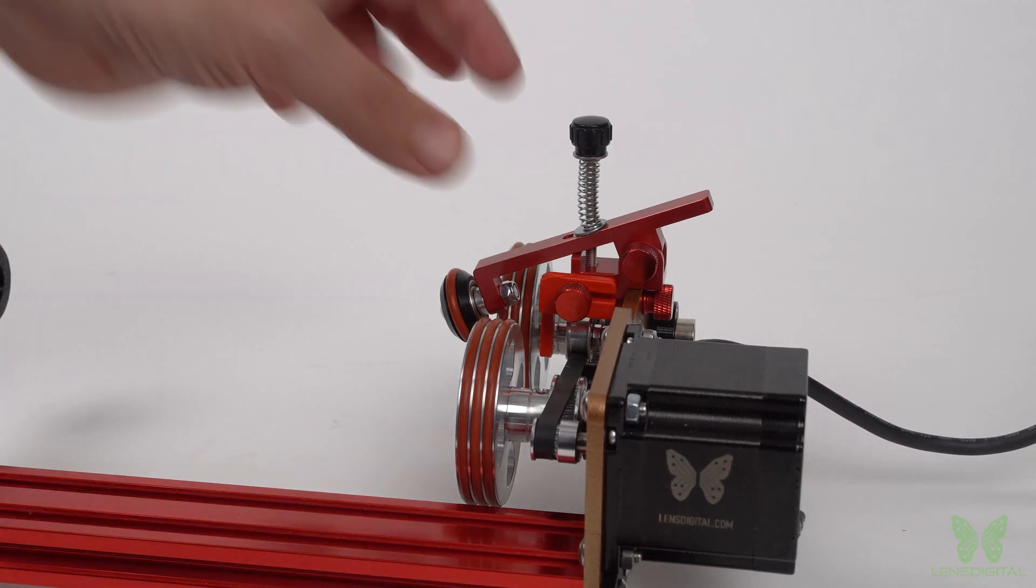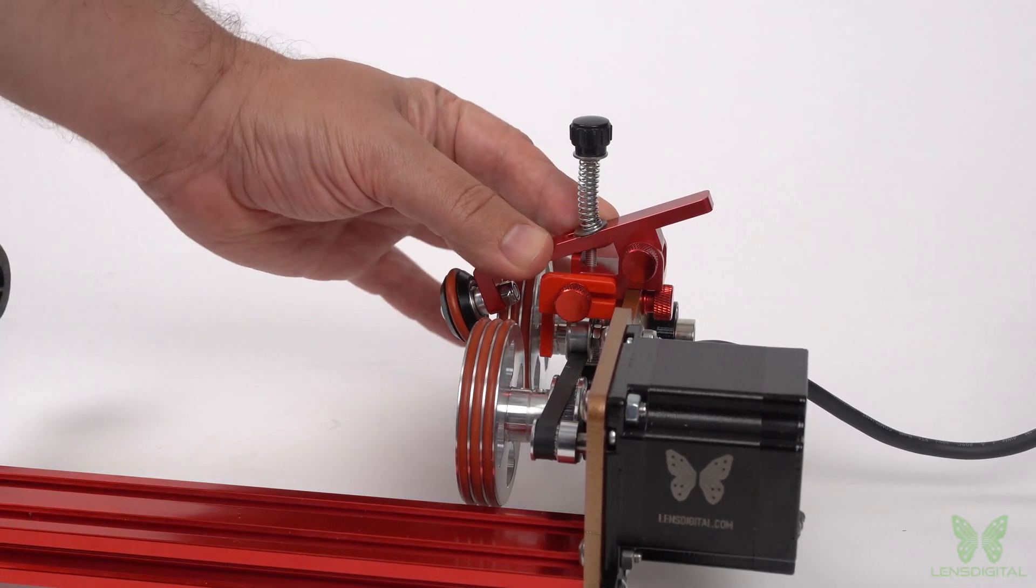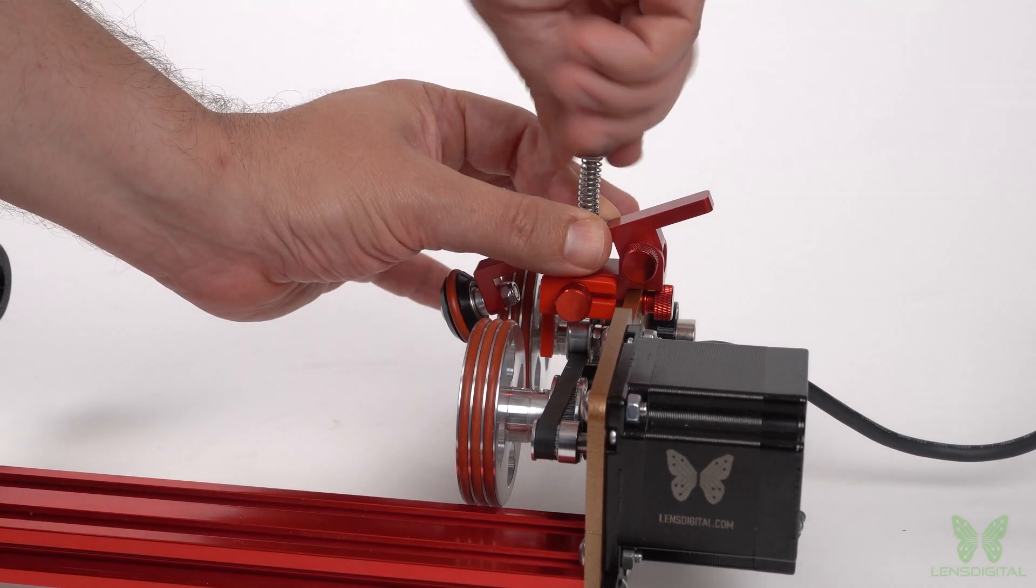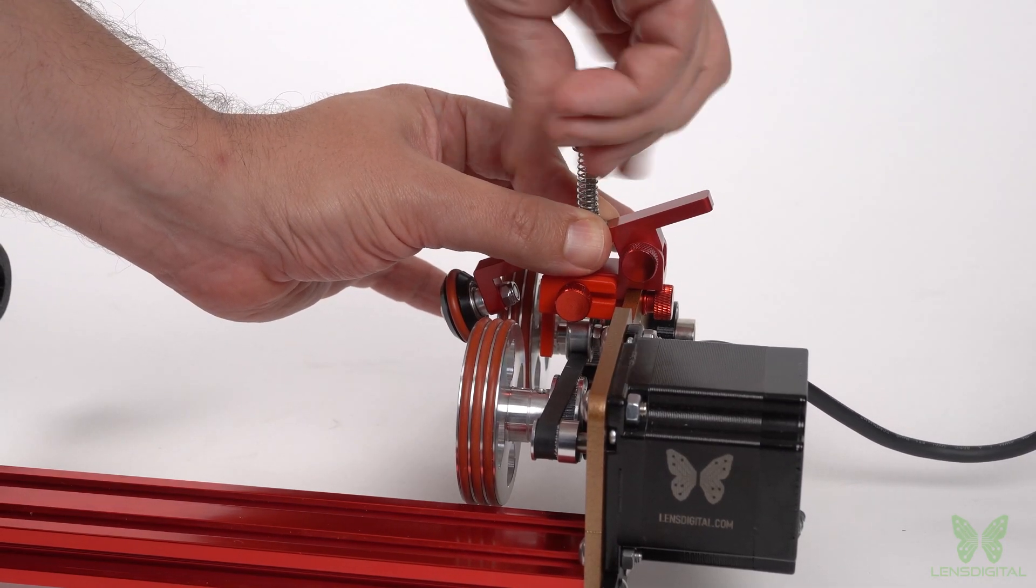You can remove the clamp arm if it gets in the way. For example, when engraving in a bottle. For this, you will need to unscrew this black thumb screw with the spring.